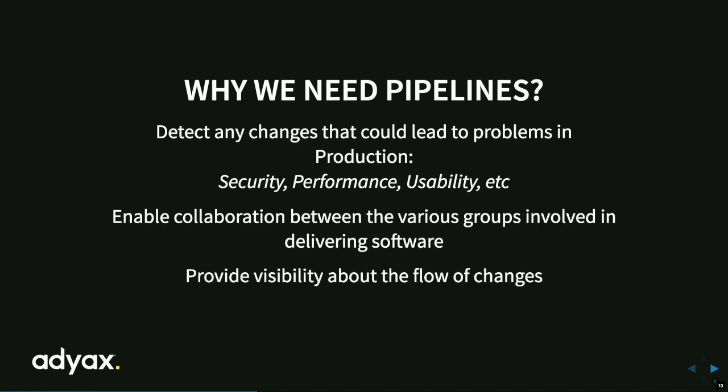Why do we need pipelines? Any changes on production can create problems. Hopefully your code is covered by tests that run every time you update the code. The main point is that pipelines enable collaboration between different groups working on the project — the QA team, development team, and sysadmins. With automation, sysadmins are mostly hands-off because everything is handled by the developer and team lead. You need visibility — you don't just press a button and wait without knowing what's happening. If something is broken, you can't see it without pipelines, but with pipelines you have full visibility.